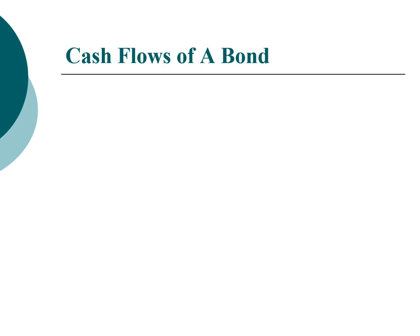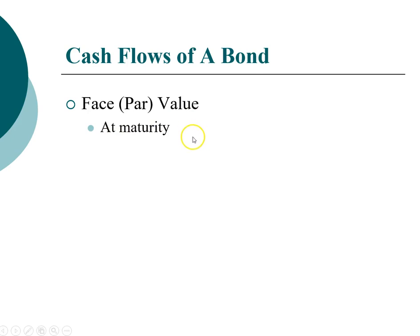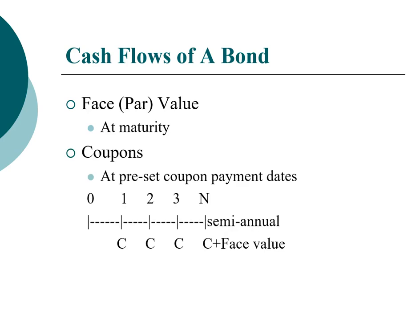Now let's take a look at a specific example — a bond. To value a bond we need to know the cash flows associated with it, and there are two types. The first is called face value or par value. This is the amount that will be returned to the investor at the time of maturity — on maturity day you get your face value back. The second component is the interest payment, which we call the coupon. The coupon is the amount of payment you receive on specific recurring dates.